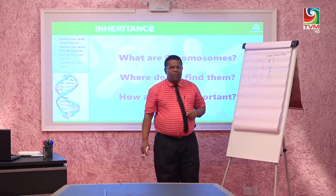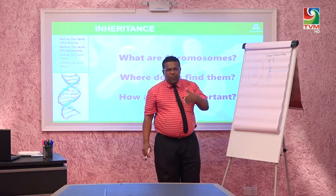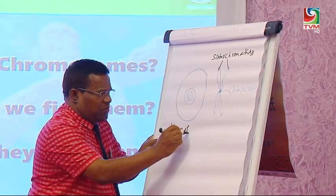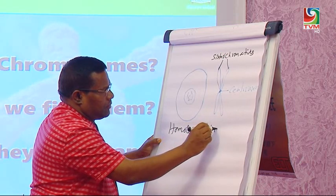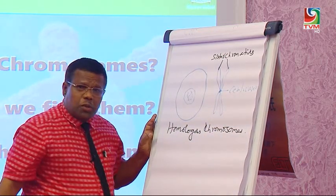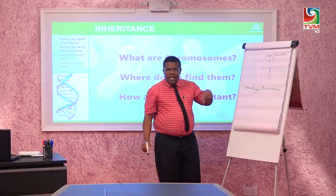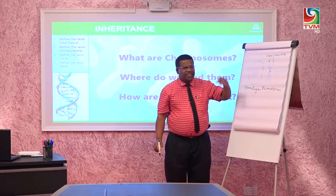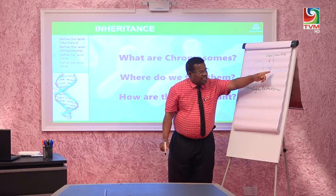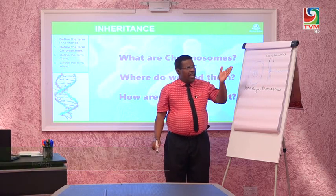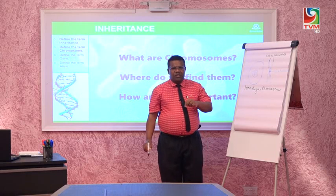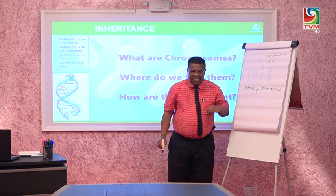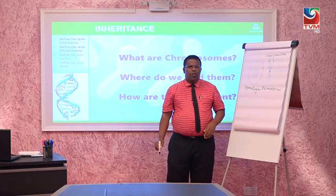Chromosomes are found in pairs, and chromosomes in a pair are said to be homologous chromosomes. Homologous chromosomes have the same length, the same position for the centromere, the same staining property, and the same loci — loci being the plural of locus — for the genes.